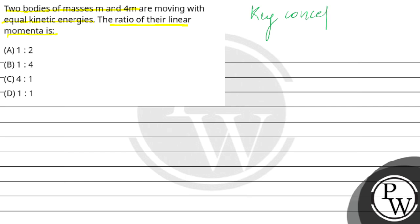The key concept in this question is that kinetic energy is written as p squared by 2m, where p is linear momentum and m is the mass of the body.